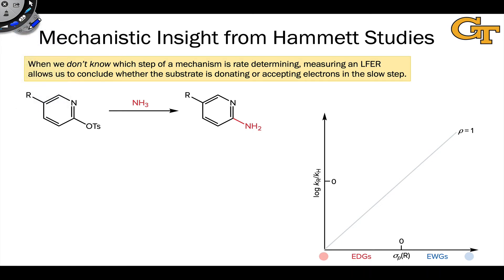I want to show one last example of a situation where a Hammett study can provide mechanistic insight. The key is when we don't know which step of a mechanism is rate determining.